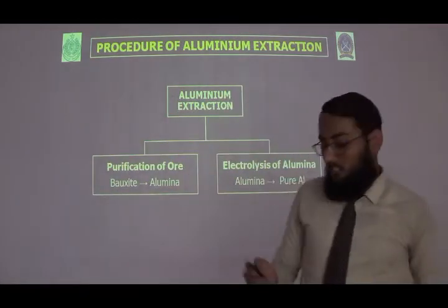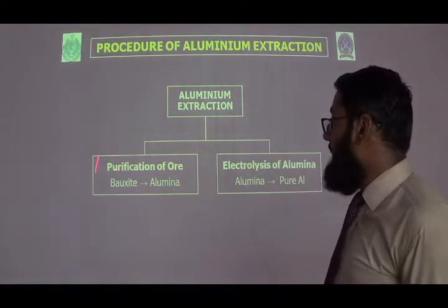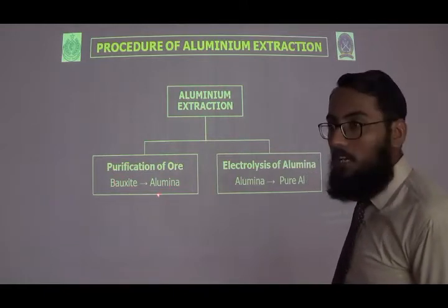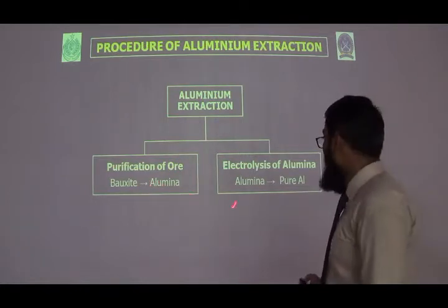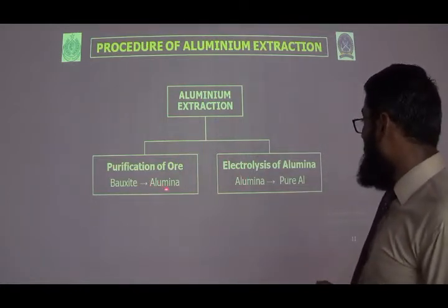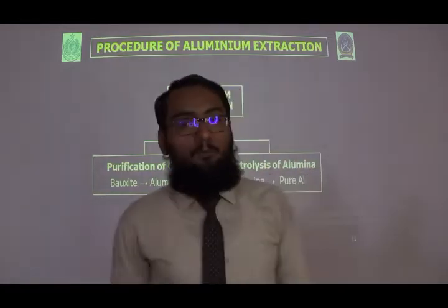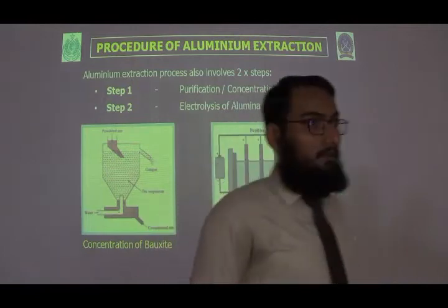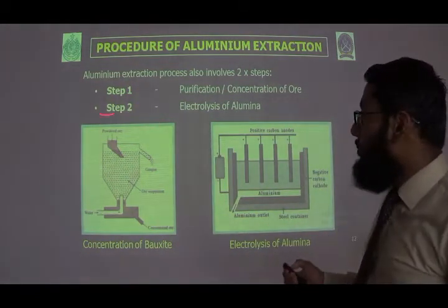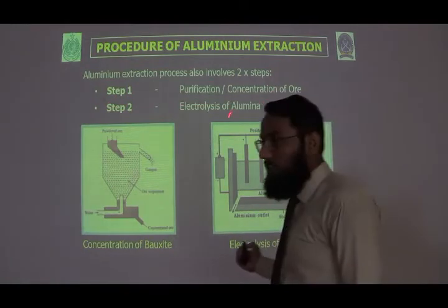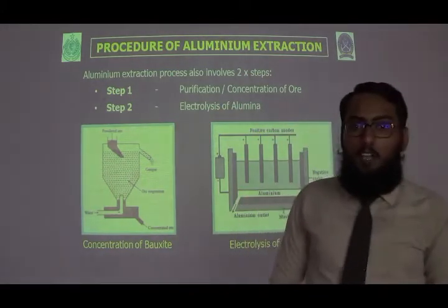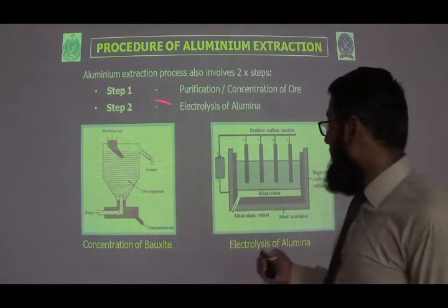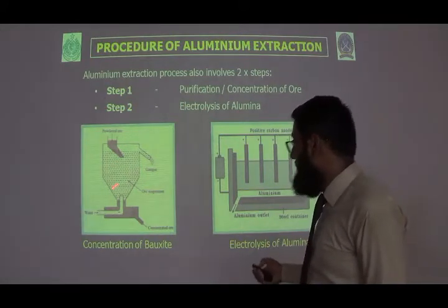The main procedure for extraction of aluminium has two steps. The first step is purification and concentration of the ore, where chemical impurities are removed from the bauxite. The second step is the electrolysis of aluminium oxide to obtain pure aluminium.